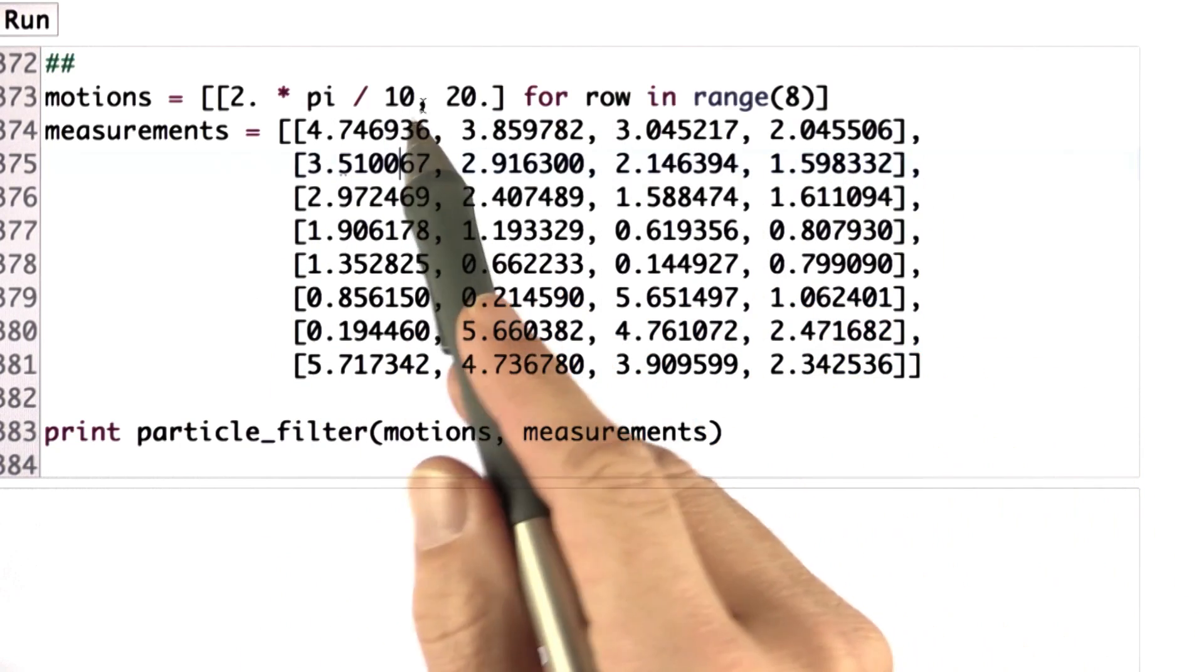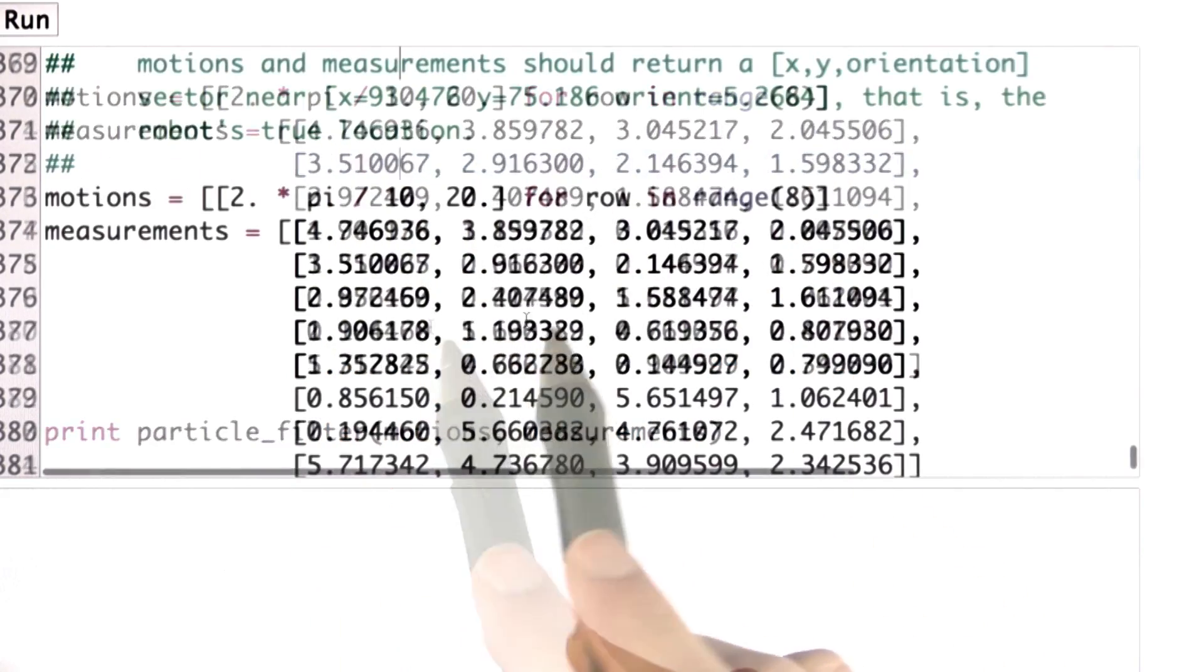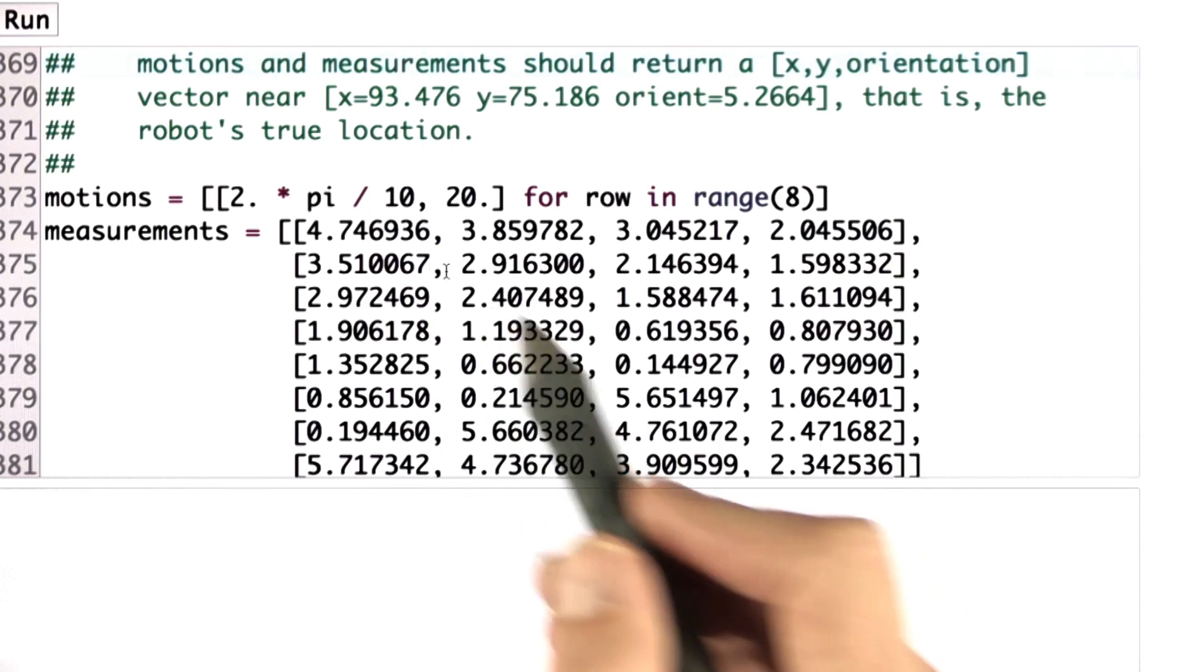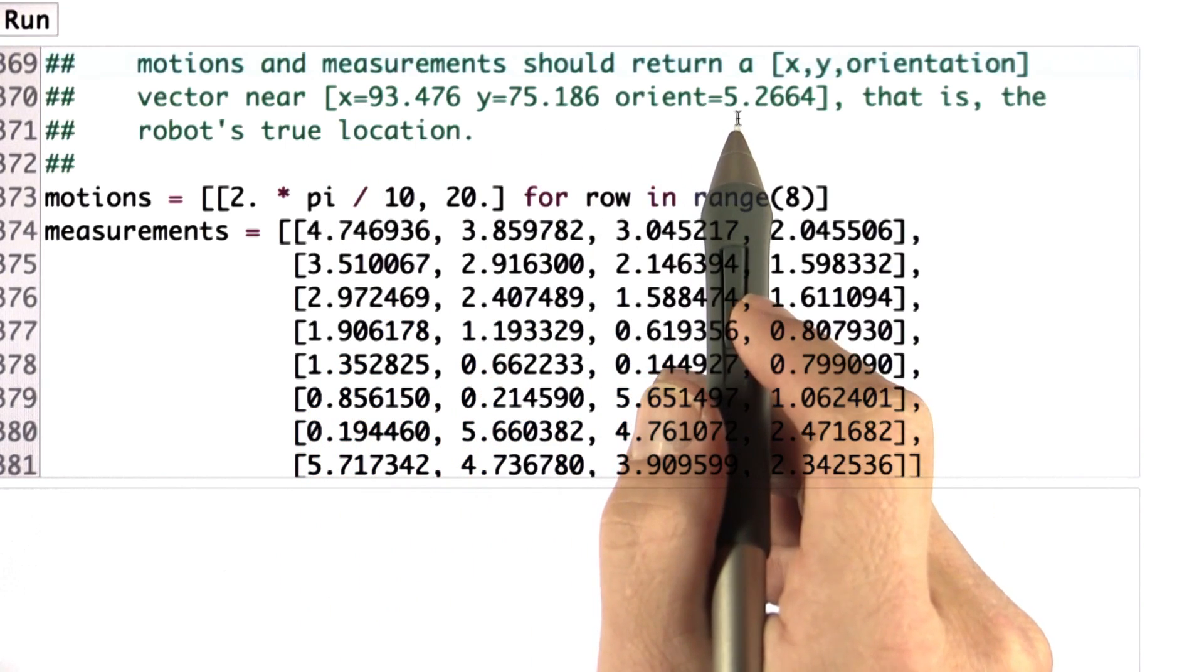It also has eight measurements, which are the bearings to those four different landmarks. If I go up a little bit in the code, then you'll find that the ground truth final position was 93, 75, and 5.2.